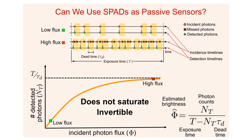At high flux, the SPAD misses a large fraction of the incident photons due to the dead times and the response curve flattens out. The key distinction from a conventional pixel is that it never reaches the saturation limit and it continues to capture photons through the end of the exposure time. In fact, it is possible to analytically invert this response curve and estimate the scene brightness from the photon counts, as shown in the simple equation here on the right.